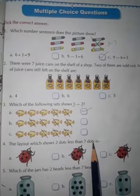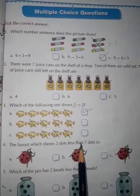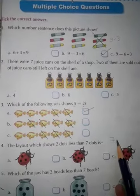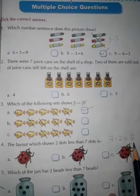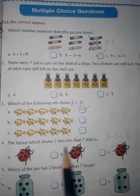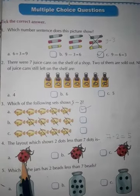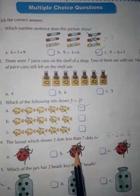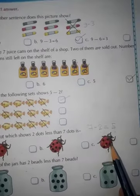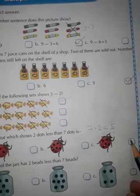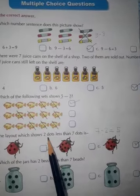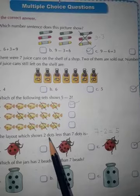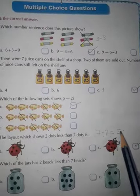Next. Which layout shows two dots less than seven dots? Two dots less than seven dots means seven minus two is equal to five. So you tick on the five dots. Which ladybug has five dots? One, two, three — this is wrong. One, two, three, four, five, six, seven — this is also wrong. One, two, three, four, five — this is right. So you tick on C box.